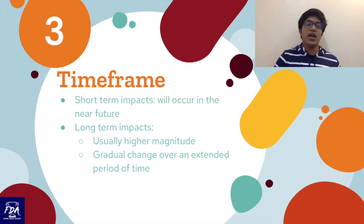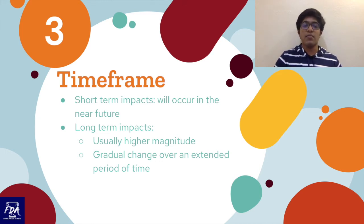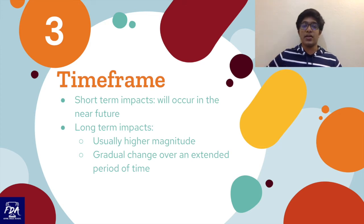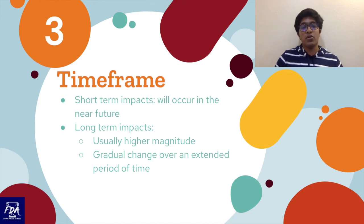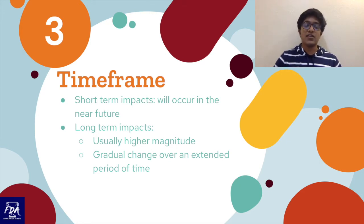The third thing is time frame. Short-term impacts will occur in the near future, while long-term impacts are usually higher magnitude but involve gradual change over an extended period. You leverage time frame by saying something is going to happen sooner and therefore should be prioritized above things happening later. For example, you can set a timeline with global warming: say that by 2025, global warming will be irreversible and will affect a whole bunch of people — that's sooner than your opponent's impacts, so because of time frame, global warming is the more important impact to deal with first.